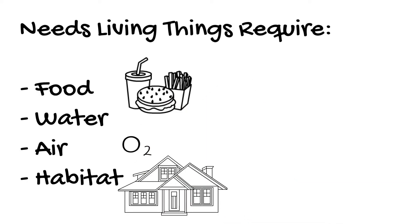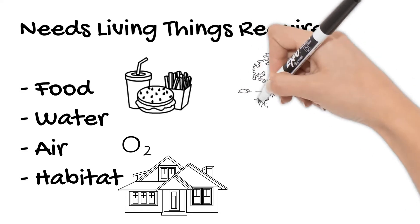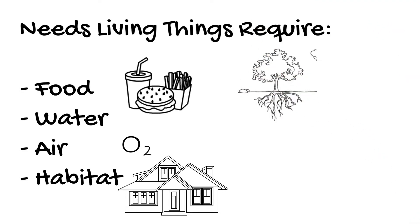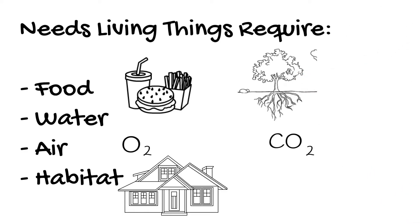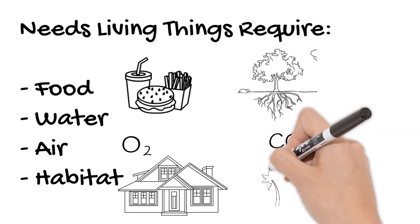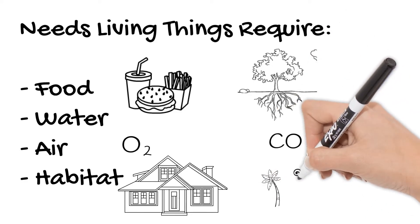Those trees out my window get their food from the soil and water from the ground to grow tall. They take in carbon dioxide from the air for their respiration. And their habitat, where they live, depends on the type of tree, wherever it's able to grow well and safely — such as palm trees grow where it's warm.